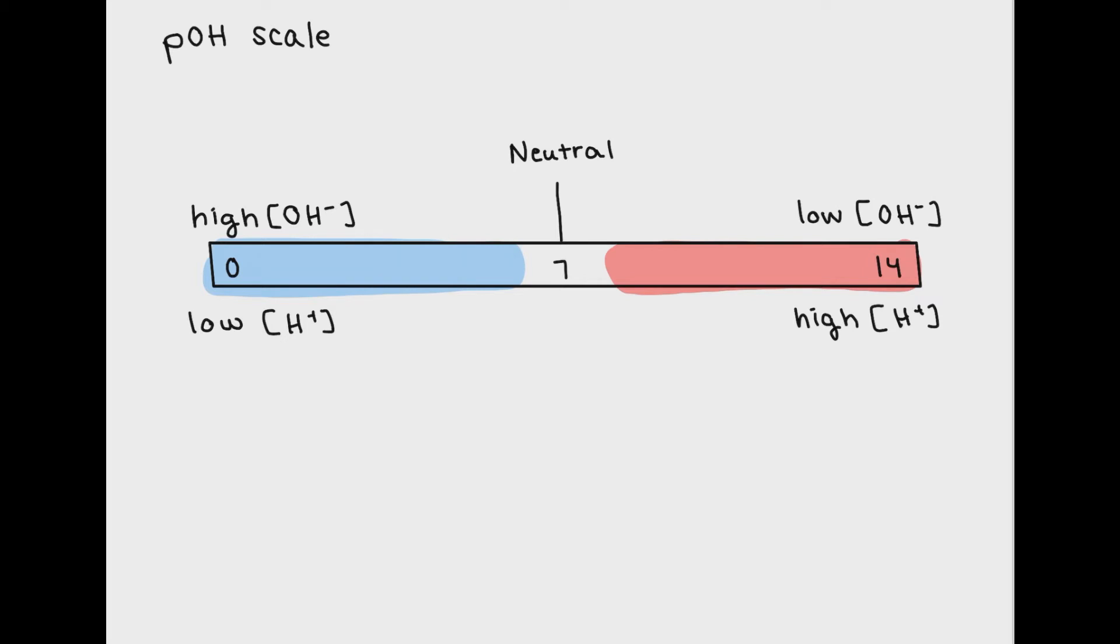A low number on the pOH scale corresponds with a very high concentration of OH-, and a very high pOH corresponds with a very low amount of OH-.